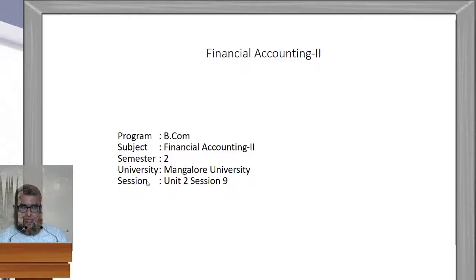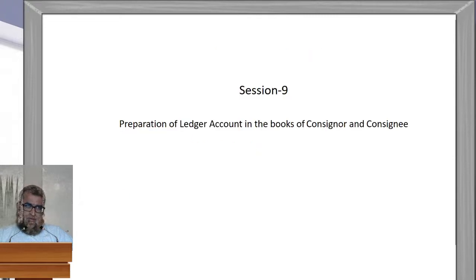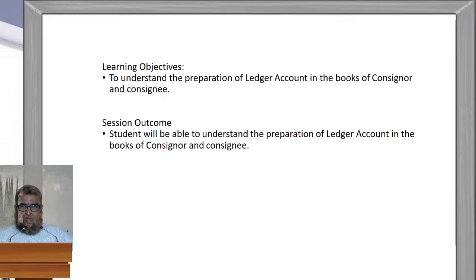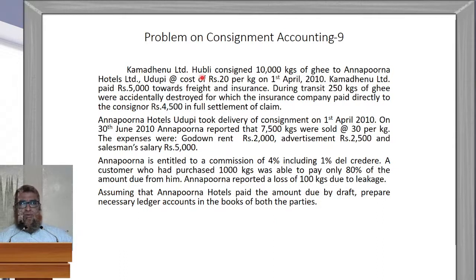Dear students, welcome to Digital Learning. We are studying Financial Accounting 2 of 2nd Semester at Mangrove University, and today we are in the 9th session of Unit 2, that is Consignment Accounting. We will learn the preparation of ledger accounts in the books of the consignor and also the consignee. Kamadenu Limited, Hubli, consigned 10,000 kgs of ghee to Annapurna Hotels, Udupi, at a cost of 20 rupees per kg on 1st April 2010.